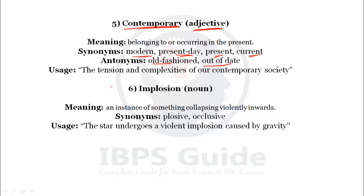Example use of contemporary: 'The tension and complexities of our contemporary society' — our modern society has both tension and complexities. Contemporary writers, singers, authors, and poets can all be described as contemporary when they exist or work in the same time period.